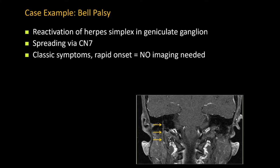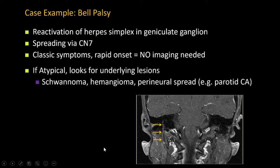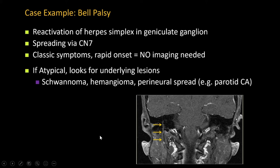An important thing to know: if the symptoms are very classic and the clinician is very confident about a diagnosis of Bell's palsy, you don't need imaging to make that diagnosis. The purpose of imaging is when symptoms become atypical — for example, if the patient was treated and did not resolve as expected. You may want to image to make sure you're not being fooled by another entity, especially perineural spread of a parotid malignancy. Remember the facial nerve extends superficial to the parotid gland, so parotid malignancy may travel through the facial nerve.